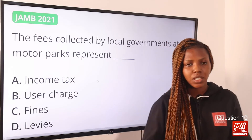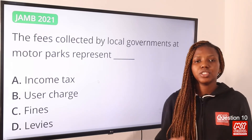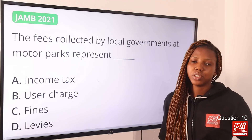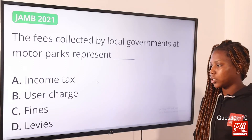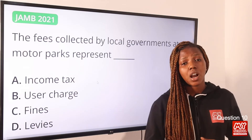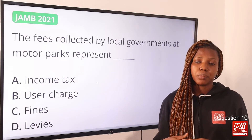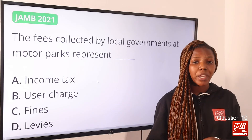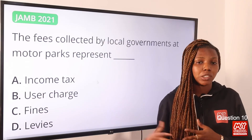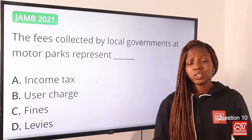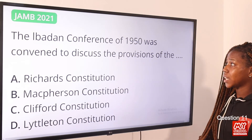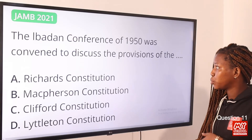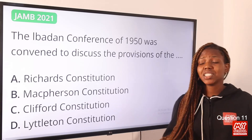Question ten: The fees collected by local government at motor parks represent — the answer is option D, levies. Levies refer to a charge imposed on something — in this case, charges imposed on motor parks. Fines, by contrast, are monetary penalties for a crime. The correct answer is levies.